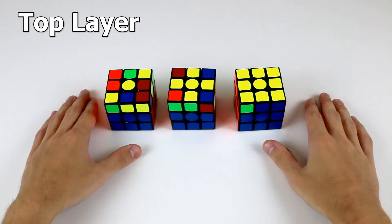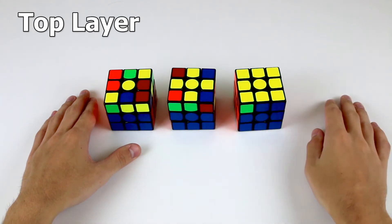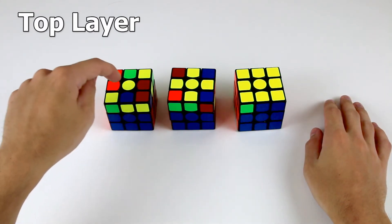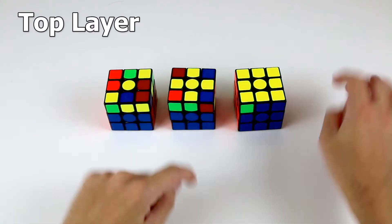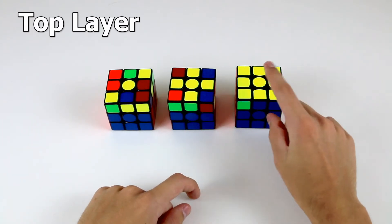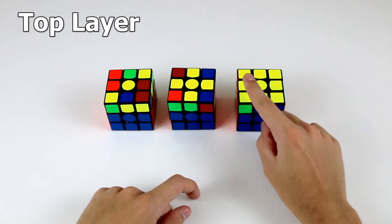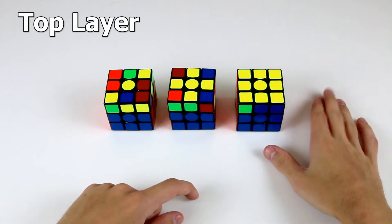We're then going to solve the final layer in four steps. The first two of those steps transform the cube from something like this to something like this, where we've oriented all of the pieces of our top layer such that the entire top face is a single color.